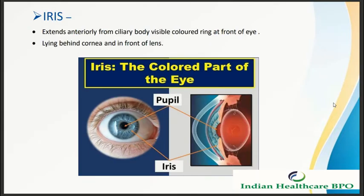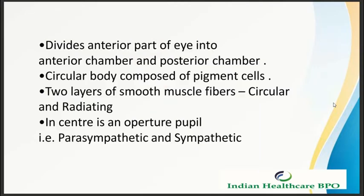The iris extends anteriorly from the ciliary body and is the visible coloring at the front of the eye, lying behind the cornea and in front of the lens. It divides the anterior part of the eye into the anterior chamber and posterior chamber. It is a circular body composed of pigment cells and two layers of smooth muscle fibers — circular and radiating. In the center is an opening called the pupil.